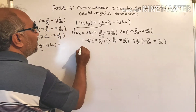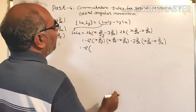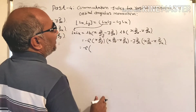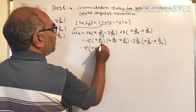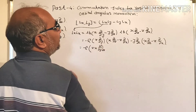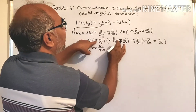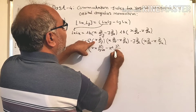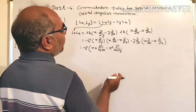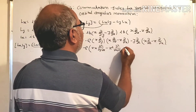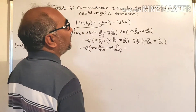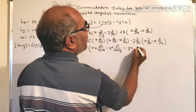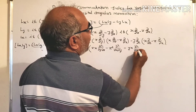Now we are multiplying term by term inside, and this equals −ħ² common, into bracket: zx ∂²/∂y∂z minus z² ∂²/∂y∂x, and from the second group we get terms with y. This gives us the first term as zx ∂²/∂y∂z, and then minus z² ∂²/∂x∂y.